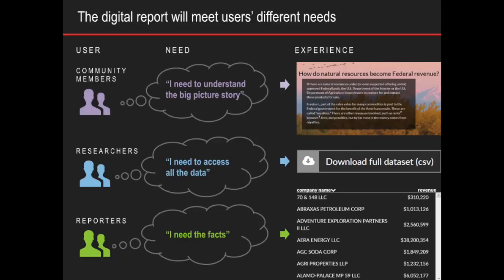We're looking at reconfiguring the site in ways driven by the questions a user may have. When you come on the site, you'll be able to immediately see if a question matches what's on your mind and navigate to that area. For example, you might want to learn about extractive industries generally, or geographically — if you're in a community in the Gulf, you may want to focus on revenues from Louisiana, or if you're onshore in Wyoming in coal country, that's what you're focused on. We're trying to make the site as responsive to those needs as possible.